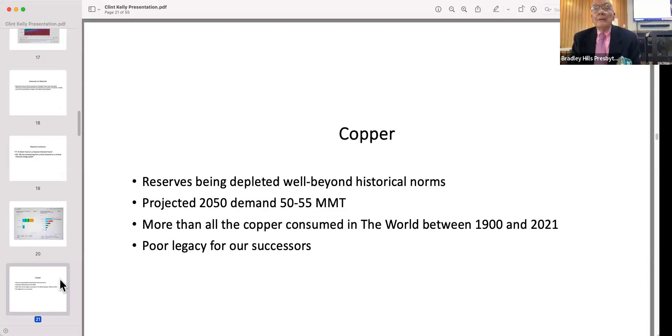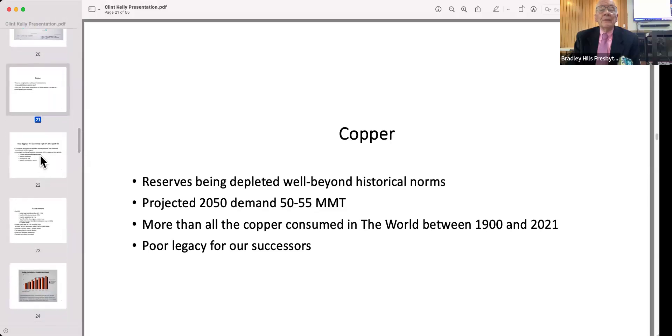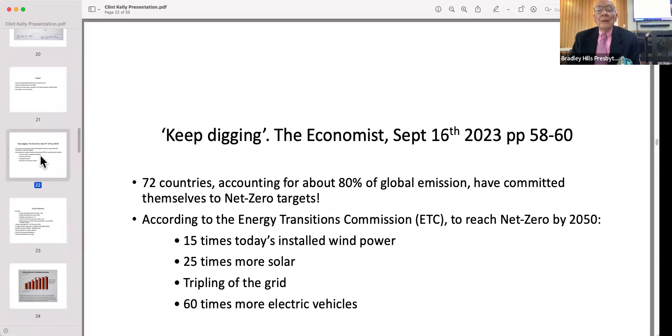Per megawatt you need 8,000 kilograms of copper or about eight metric tons of copper, and it can be a lot more depending on the particular size and make of the turbine. Installing all of these turbines and solar panels, which use a fair amount of copper for the wiring, is depleting known copper reserves well beyond historic norms. The projection looking ahead a few years is between 50 and 55 million metric tons. One source noted that's more than all the copper that's been consumed in the world between 1900 and 2021. It's a poor legacy for our descendants.